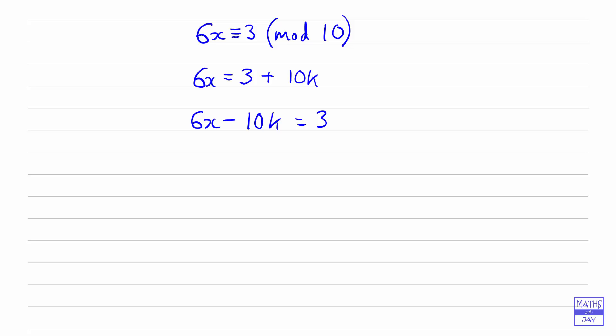So our left-hand side has a common factor, a factor of 2. So we can see that the left-hand side is divisible by 2. Now 3x and 5k are both integers because x and k are both integers. So in other words, what we've got in brackets must be an integer.